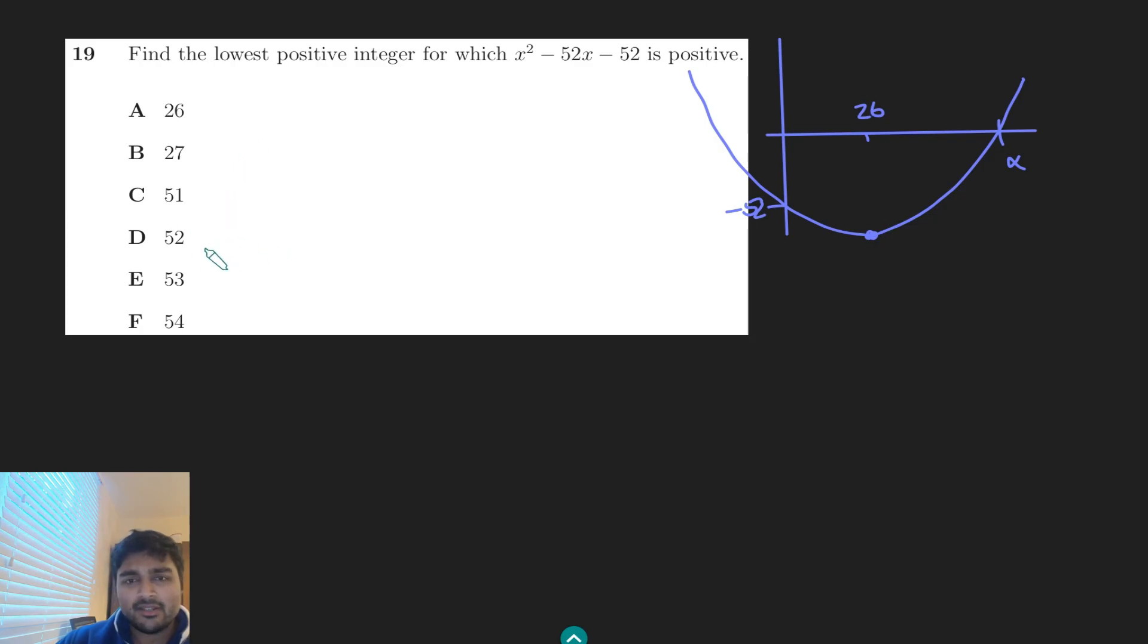Now, from our sketch here, you can see it's probably not going to be 27. That being said, you might want to try 27. But the easiest number here to try is probably 52. And if you do that, you get 52 squared minus 52 times 52 minus 52. And that's very clearly minus 52 because those guys cancel out and you're left with the minus 52 at the end.